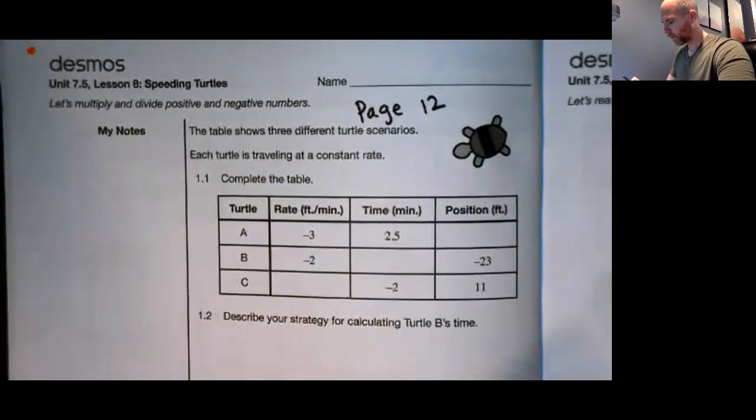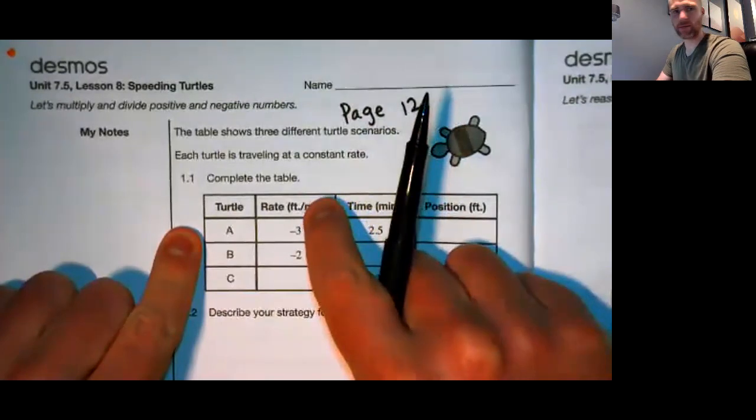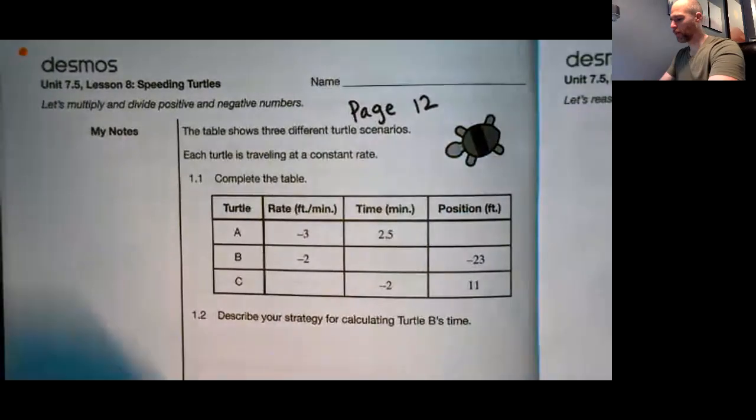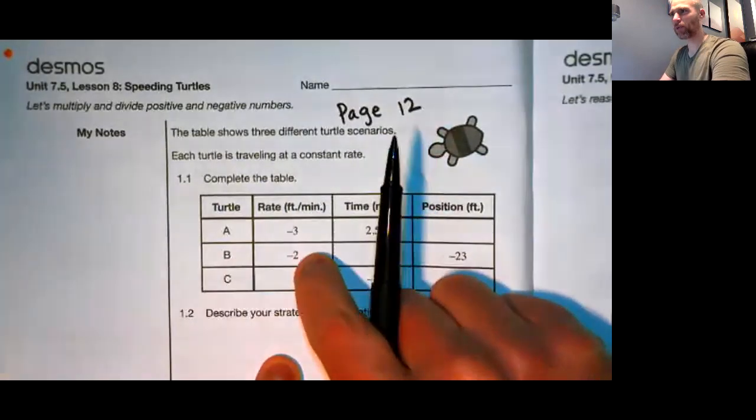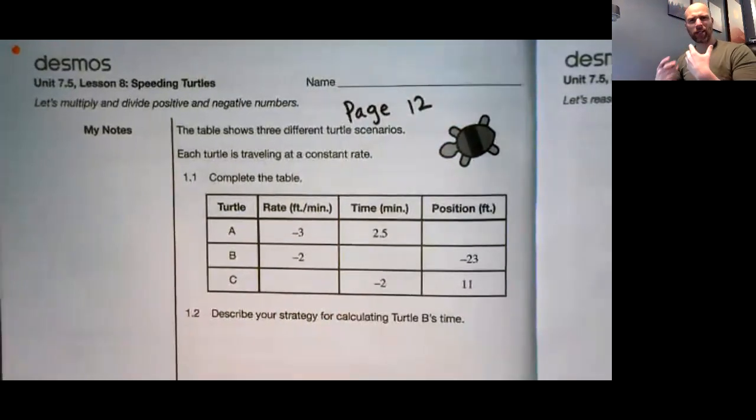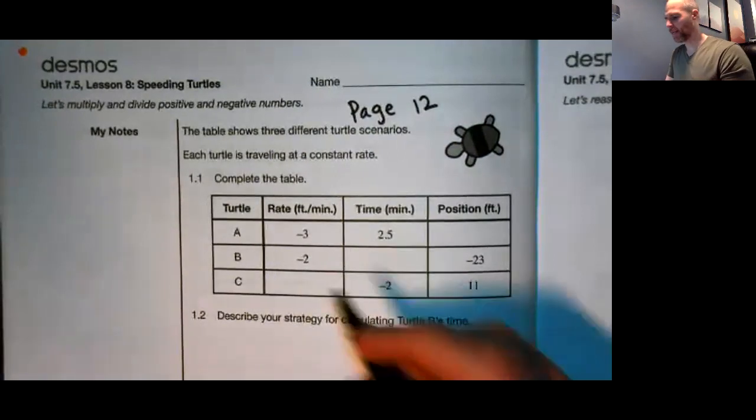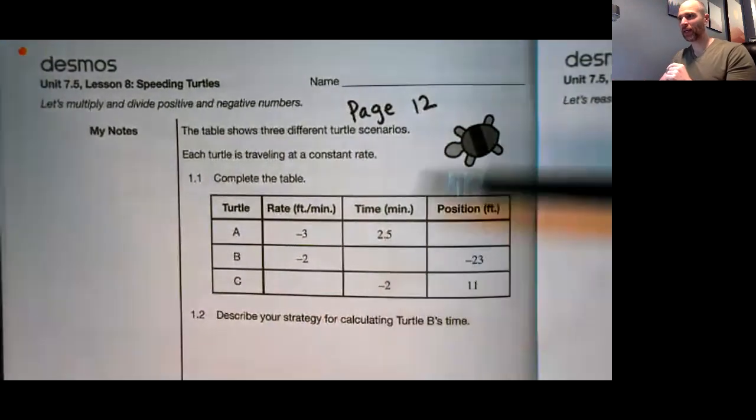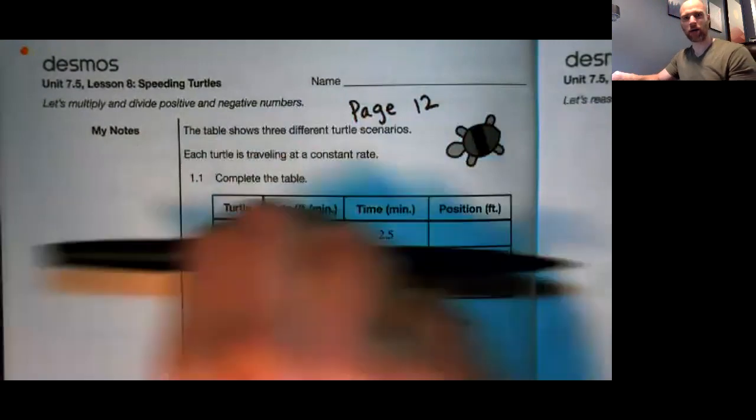What we have here is three different turtles and their rates, how fast they're going. Rates are always in some unit per some other unit, so this rate is in feet per minute. You'll notice that a couple of these turtles have negative rates. That doesn't mean they're traveling negative feet per minute. The negative sign in this context is just meant to denote that they're going in the negative direction on the number line.